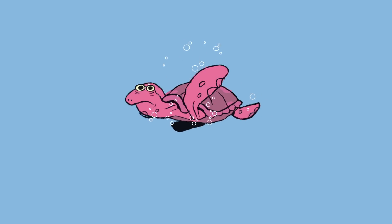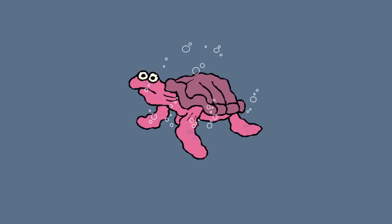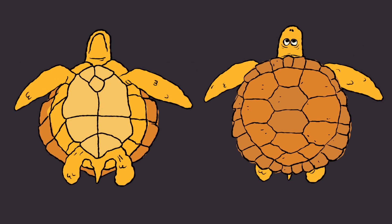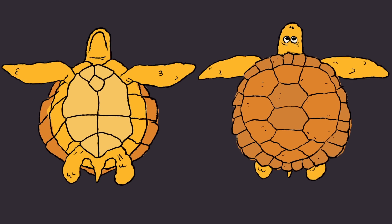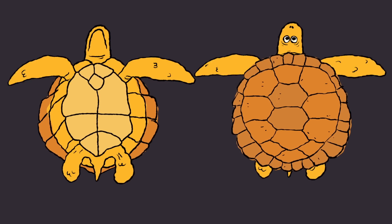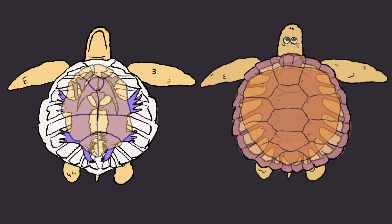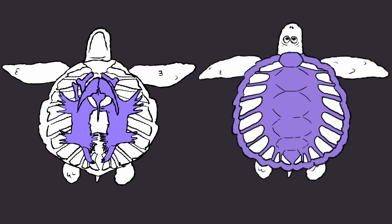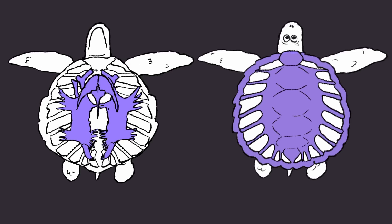It actually has two shells that develop totally separately while the turtle is still an embryo. Both are extensions of the animal's skeleton, and together they are made of almost 60 bones.